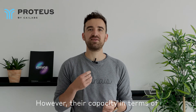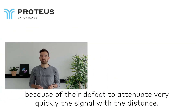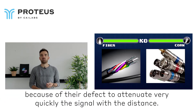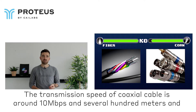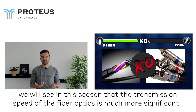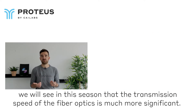However, the capacity in terms of throughput became insufficient because of the tendency to attenuate the signal very quickly with distance. The transmission speed of coaxial cable is around 10 megabits per second over several hundred meters, and we will see in this season that the transmission speed of fiber optics is much more significant.